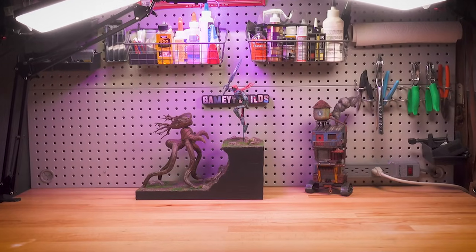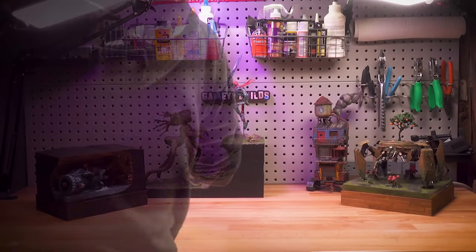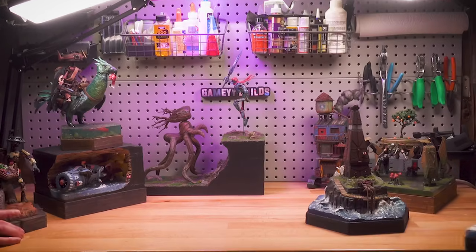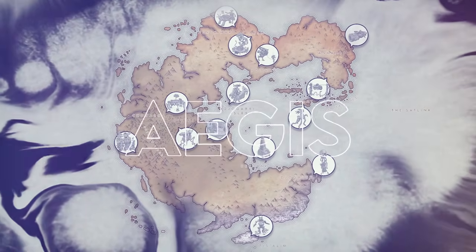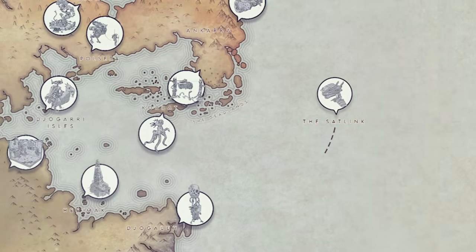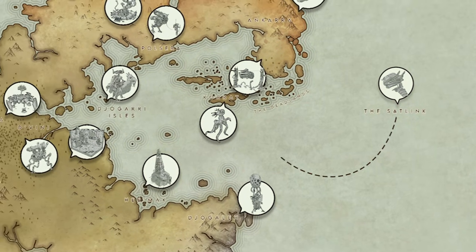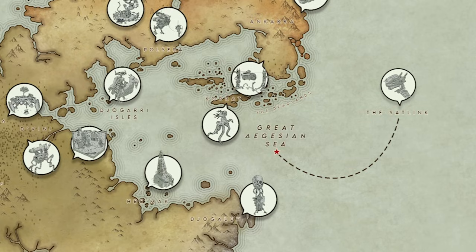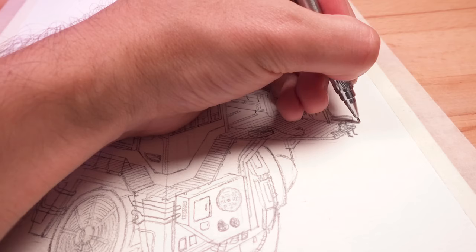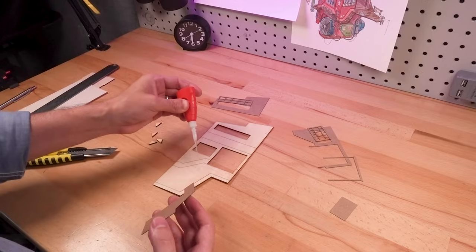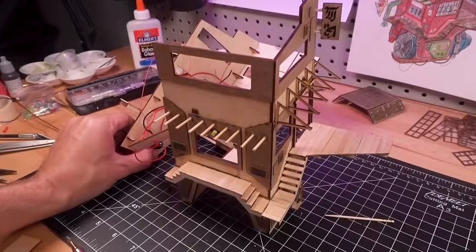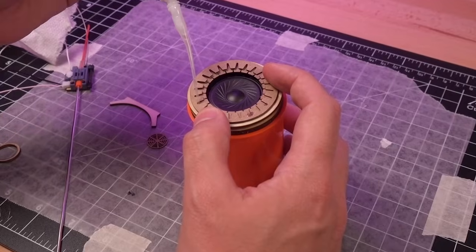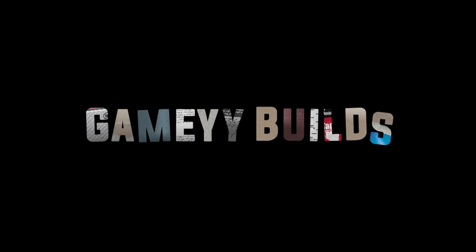Each of these handmade dioramas tells a story from a once thriving planet that has fallen slowly into disrepair. That planet is Aegis, and today we're traveling back down to the planet's surface to the sprawling Aegean Sea. This is Gamey Builds, and welcome to Beyond the Blight.